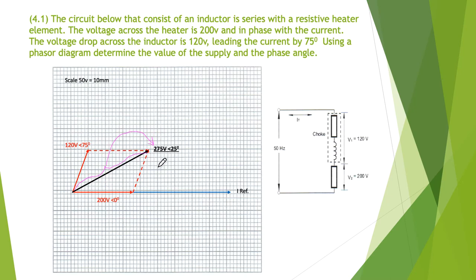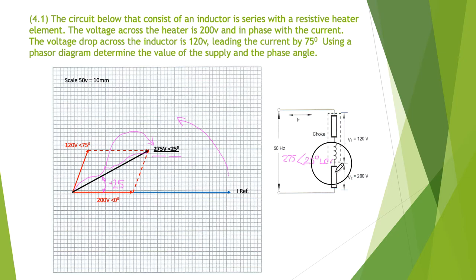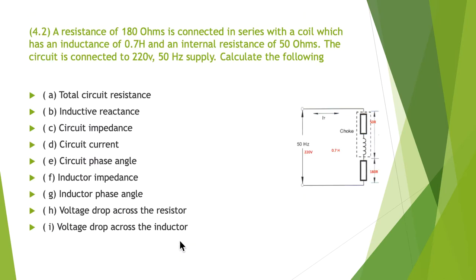I've simply scaled off the length of the phasor, giving me 275 volts. I got my protractor out and measured that angle, giving us plus 25 degrees — because we're in front of the current reference and rotating anti-clockwise, it has to be a positive reading. So our voltage applied to this circuit is 275 volts with a leading angle of plus 25 degrees.